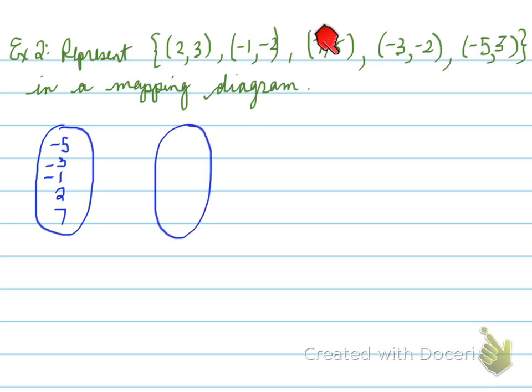Now onto the range. Alright, let's go in order. We have negative 2, we have 3, and then we have 5. Even though some of these repeat, remember we only write the number out once.